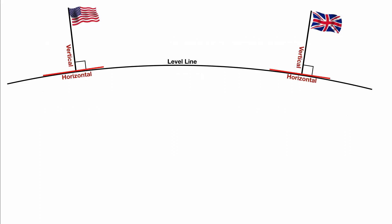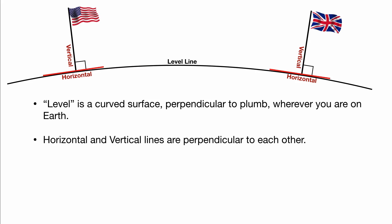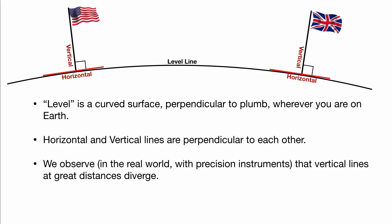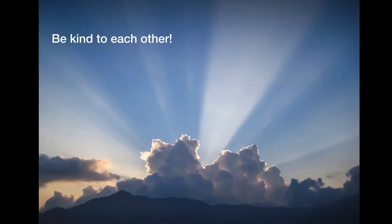Now let's revisit my modification of this diagram. Level is a curved surface perpendicular to plumb wherever you are on Earth. Horizontal and vertical lines are perpendicular to each other. And we observe in the real world with precision instruments that vertical lines at great distances diverge. Therefore, the Earth cannot be shaped more like a pizza than a basketball. As always, your comments are welcome. Please be kind to each other. Bye!